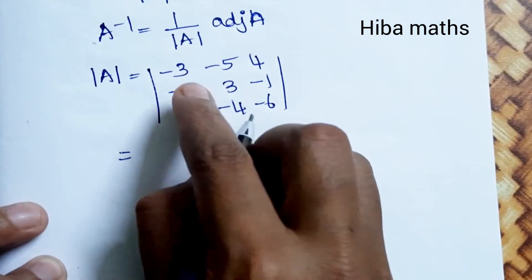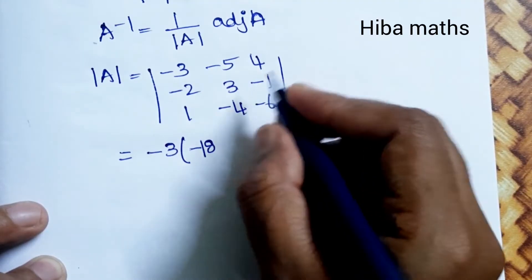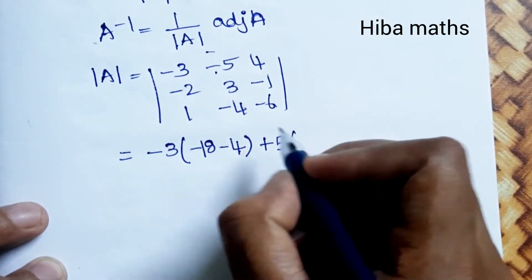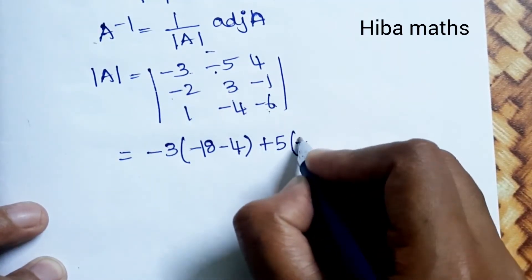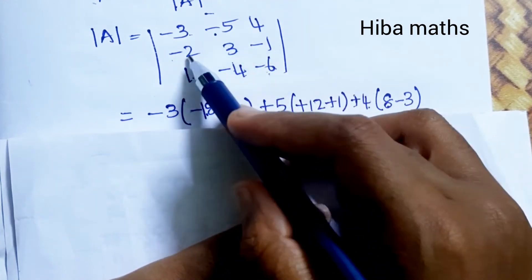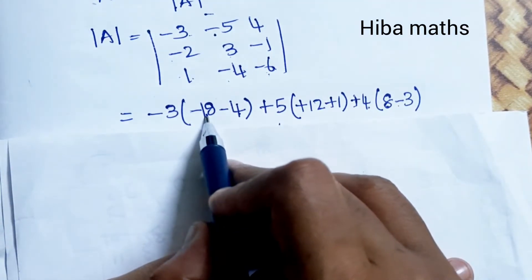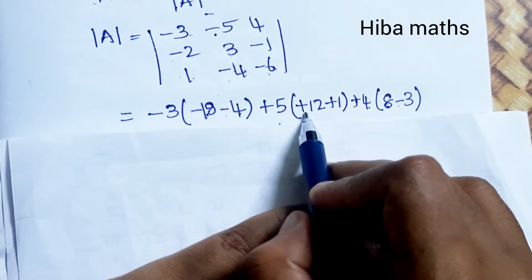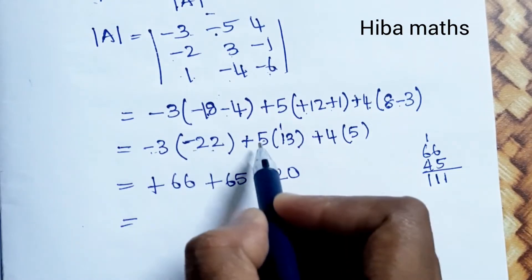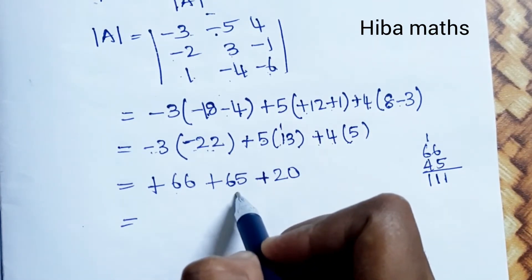Computing the determinant: expanding along the first row: -3×[3×(-6) - (-1)×(-4)] = -3×(-18 - 4) = -3×(-22) = 66. Then -(-5)×[(-2)×(-6) - (-1)×1] = +5×(12 - (-1)) = 5×13 = 65. Then 4×[(-2)×(-4) - 3×1] = 4×(8 - 3) = 4×5 = 20.